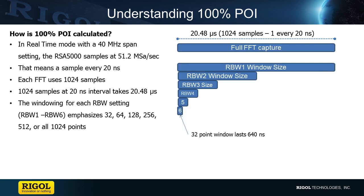Each of those FFTs has 1,024 points. With a 40 MHz span, the sample rate is 51.2 mega samples per second. Each sample is 20 nanoseconds, which means that the full FFT takes 20.48 microseconds.